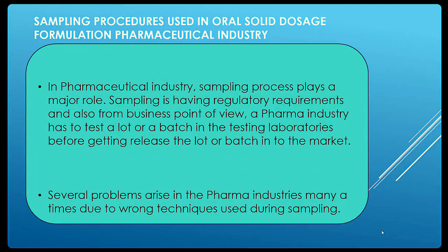Sampling procedure for solid dosage formulations in the pharmaceutical industry covers tablets and capsules. Sampling plays a major role in defining the quality of the product. The sample taken from a particular batch is sent to QC. The QC team tests the product and checks it against acceptance criteria. Based on that, the batch is either shipped or rejected — directly or indirectly indicating the quality of the product.